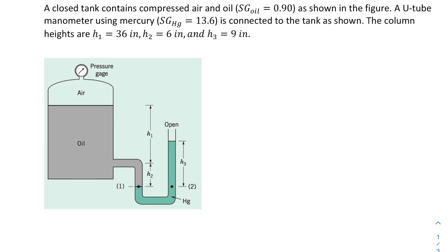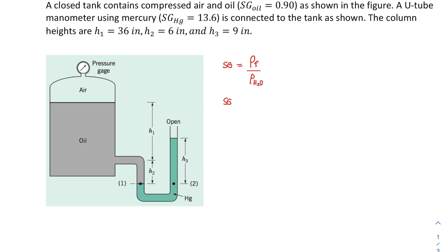Let's recall that specific gravity is basically just equal to the density of your fluid divided by the density of the reference fluid, which most of the time is water at four degrees Celsius. So in this problem, the specific gravity of oil is 0.90, which equals the density of oil divided by the density of water at 4°C. Rearranging, the density of oil is just 0.90 times the density of water at 4°C.